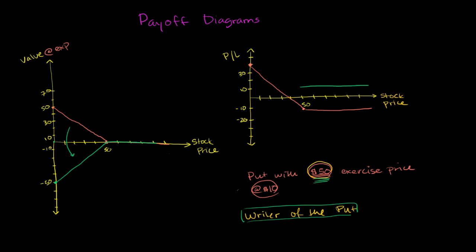He sold the put to this guy for $10. He created the put and sold it to that guy, he gets $10. If the put's not exercised, he gets to keep that $10. But then if the stock goes down and he's forced to buy the stock from the owner of the put, he has to buy it because that's his side of the deal, then all of a sudden he loses money.